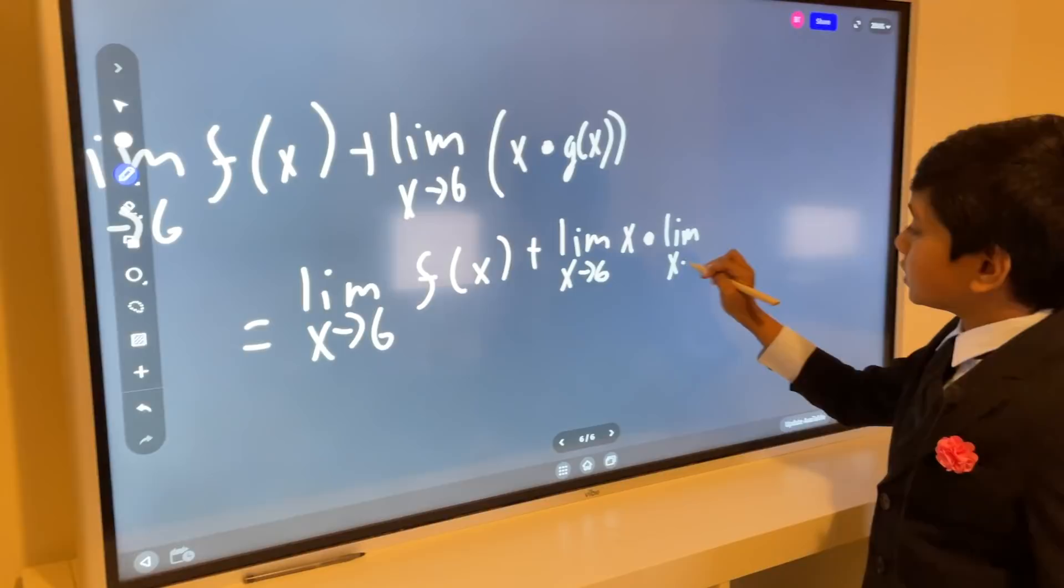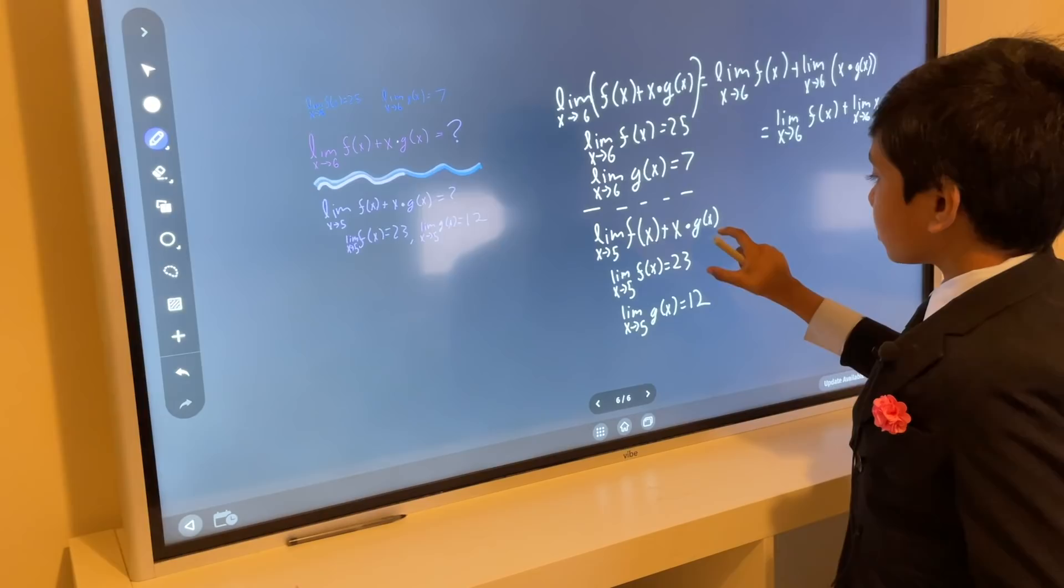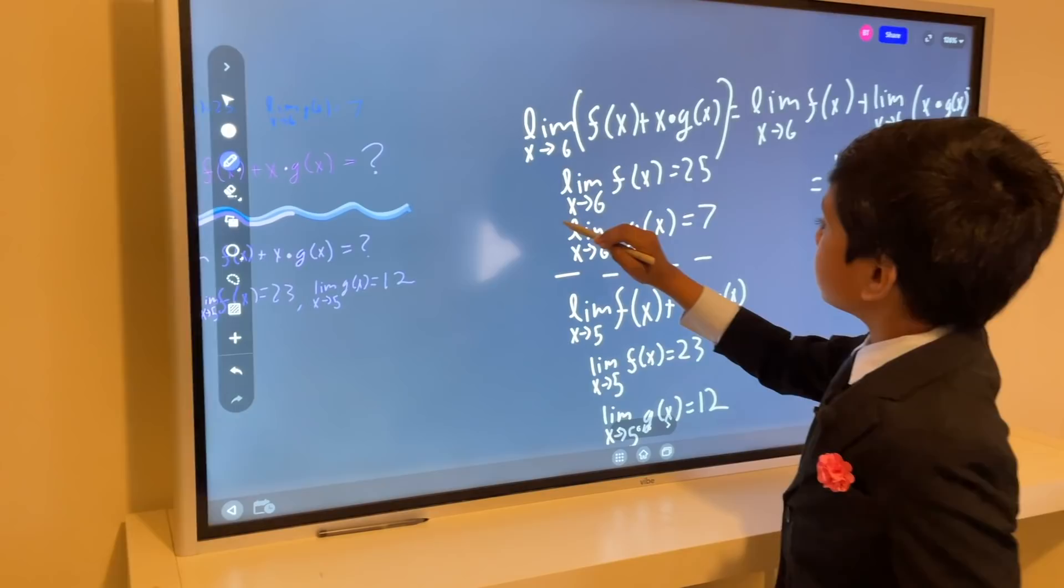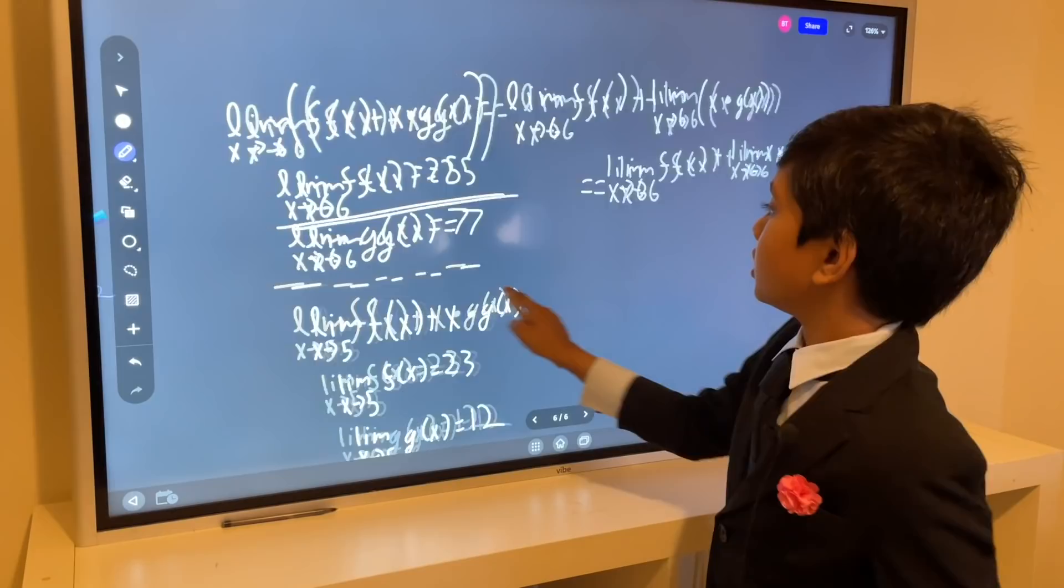So now let's plug in all the values we've learned. First of all, we have this value. This value says that the limit as x approaches 6 of f(x) is 25. So this is going to be 25.